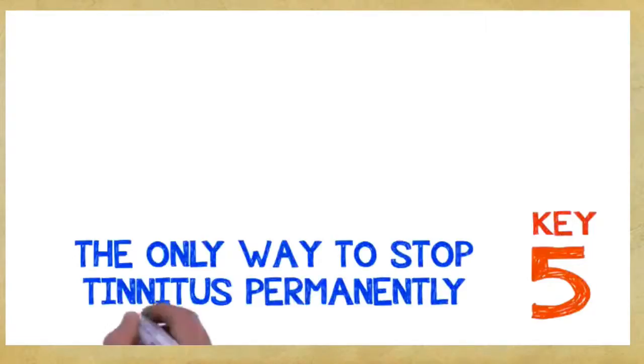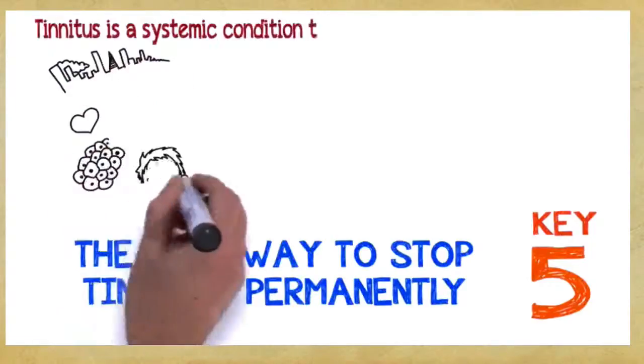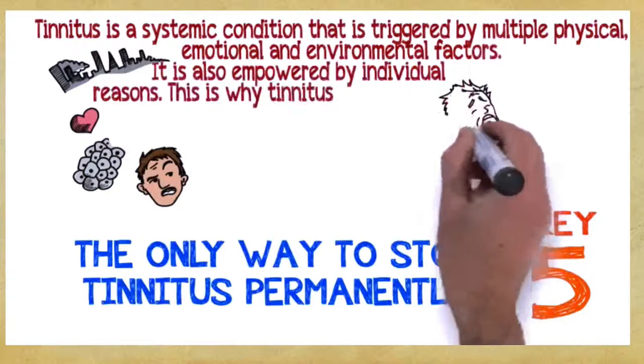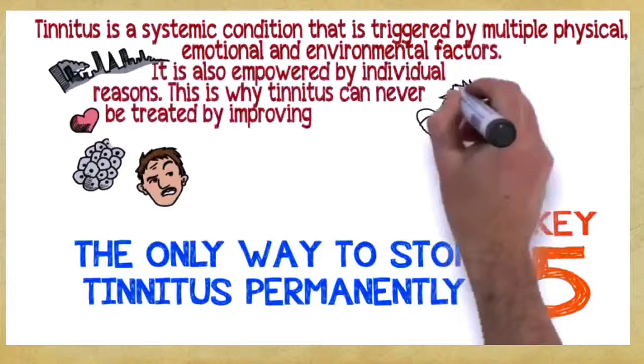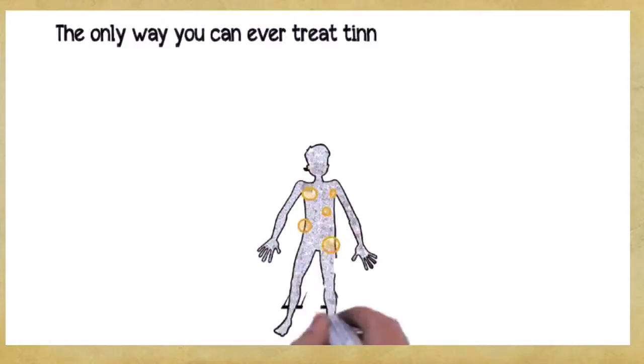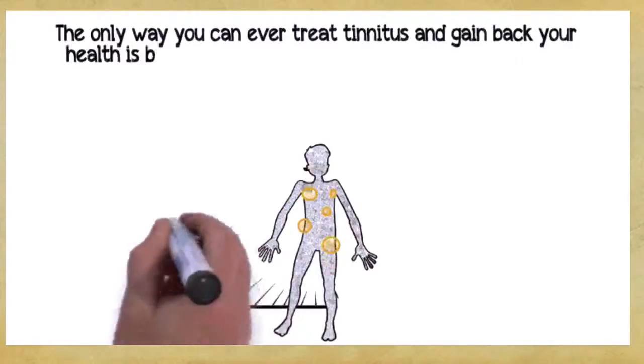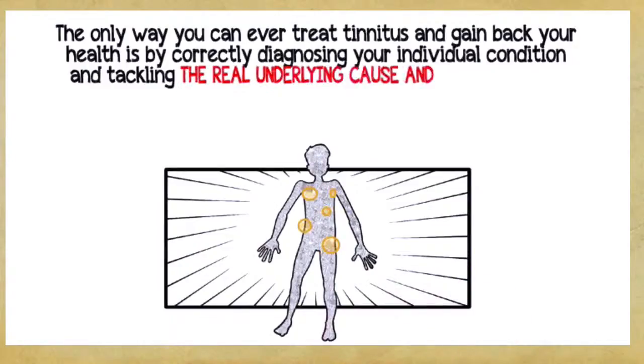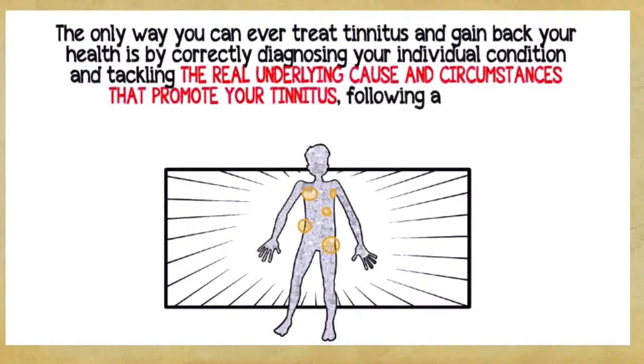Key number five. The only way to stop tinnitus permanently. Tinnitus is a systemic condition that is triggered by multiple physical, emotional, and environmental factors. It's also empowered by individual reasons. This is why tinnitus can never be treated by improving circulation, using muscle relaxers, masking the noise, or cutting a nerve in your auditory system. The only way you can ever treat tinnitus and gain back your health is by correctly diagnosing your individual condition and tackling the real underlying cause and circumstances that promote your tinnitus, following a complete, multi-dimensional, holistic program.